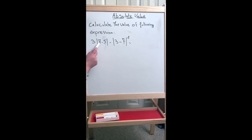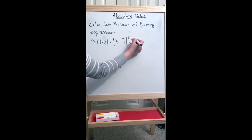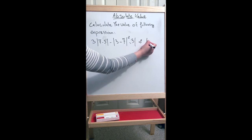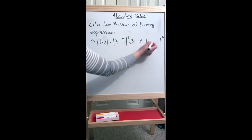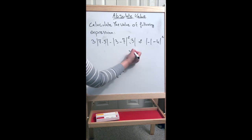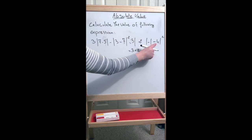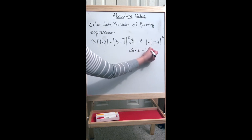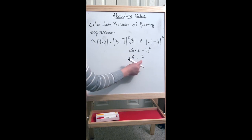Another example: 3 times the absolute value of (7 minus 5) minus the absolute value of (3 minus 7), squared. We start with the absolute values: 7 minus 5 is 2, and 3 minus 7 is -4. The absolute value of 2 is 2, and the absolute value of -4 is 4. So we have 3 times 2 minus 4 squared, which is 6 minus 16, giving us -10. Thank you.